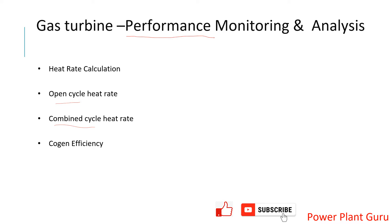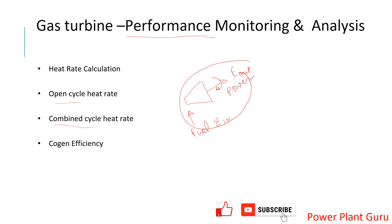Let's say your plant has only one gas turbine. For example, let me draw that — you have only one turbine system where you enter your fuel and then you get some power output. This is the energy in and this is the energy out. Based on this, if you calculate the input and output, this is called your open cycle heat rate.